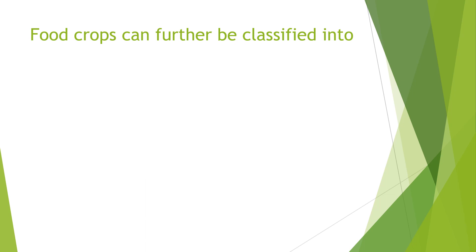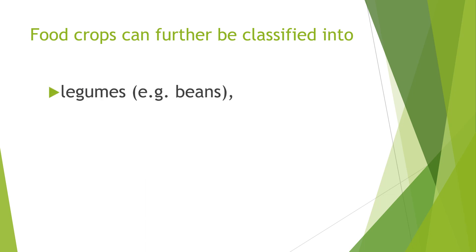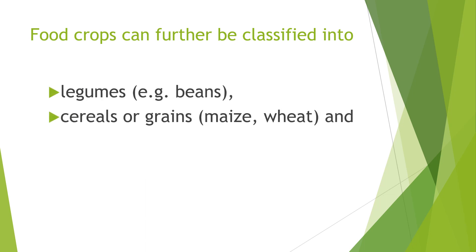Food crops can further be classified into legumes (e.g. beans), cereals or grains (e.g. maize, wheat, and groundnuts), and root crops (e.g. cassava).